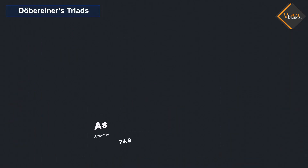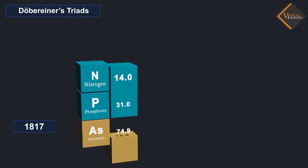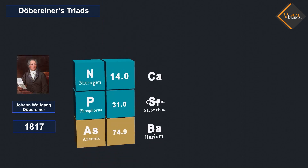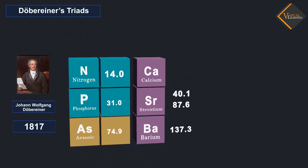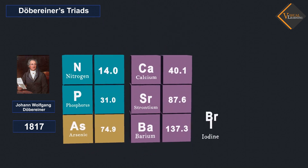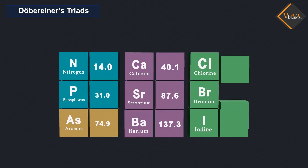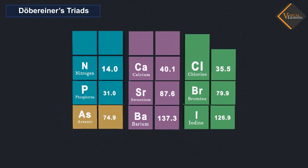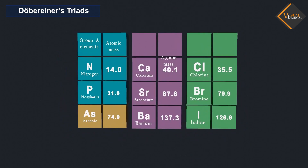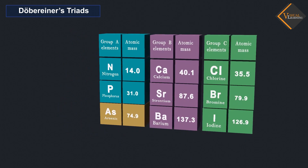Dobereiner's Triads: In the year 1817, Johann Wolfgang Dobereiner, a German chemist, tried to arrange the elements with similar properties into groups. He identified some groups having three elements each, so he called these groups triads.